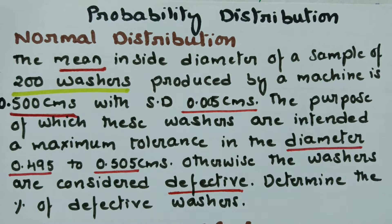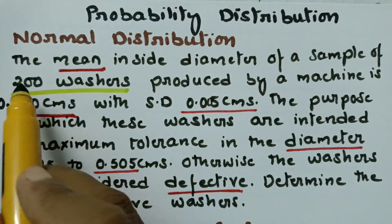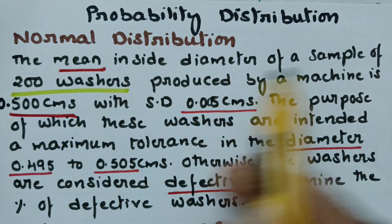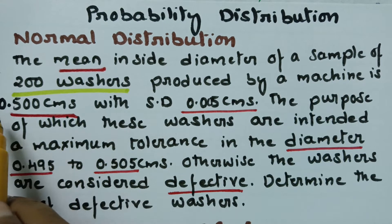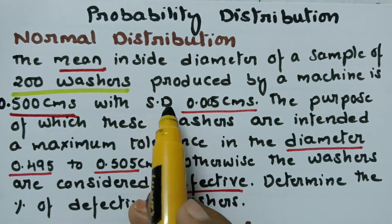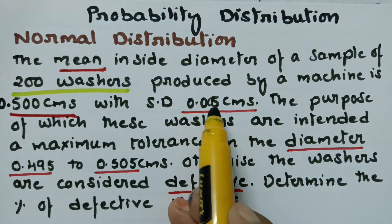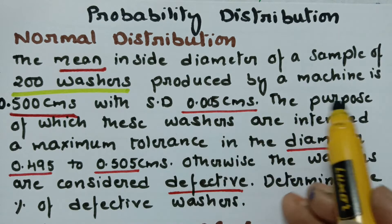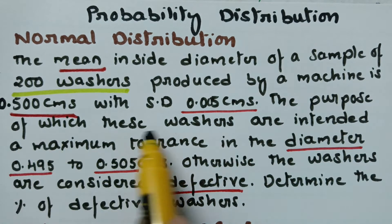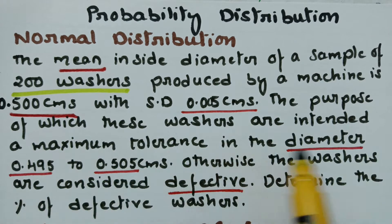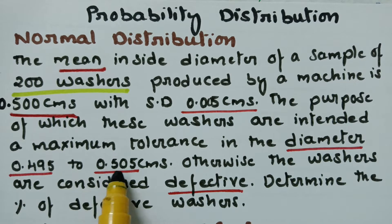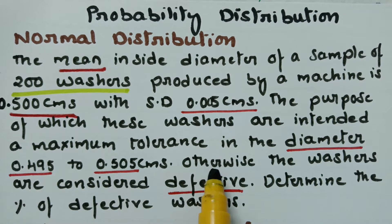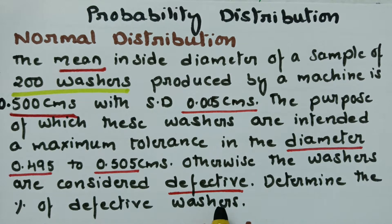Normal distribution. In today's video, here is the problem: the mean inside diameter of a sample of 200 washers produced by a machine is 0.500 centimeters and standard deviation is 0.005 centimeters. The purpose for which these washers are intended has a maximum tolerance in the diameter of 0.495 to 0.505 centimeters. Otherwise the washers are considered defective. Determine the percentage of defective washers.